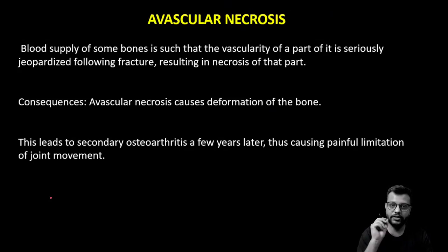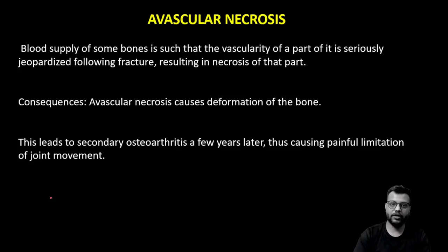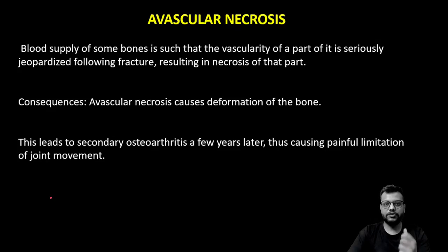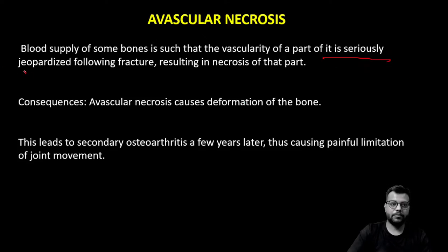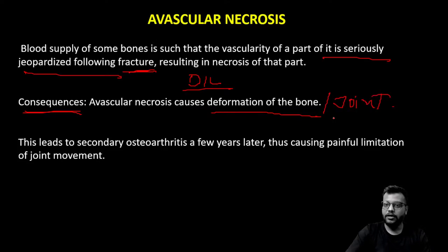Now let's start today's lecture on avascular necrosis. As the name suggests, avascular necrosis occurs due to decreased vascular supply, causing the bone to become necrosed. This blood supply is seriously jeopardized in fractures, dislocations, or systemic diseases. The consequences are deformation of the joint and bone, and years later, osteoarthritis causing pain and limitation of joint movement.